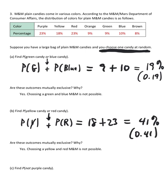Are these outcomes mutually exclusive? Yes. Choosing a yellow and red M&M is not possible when you're only allowed to pull out one candy.